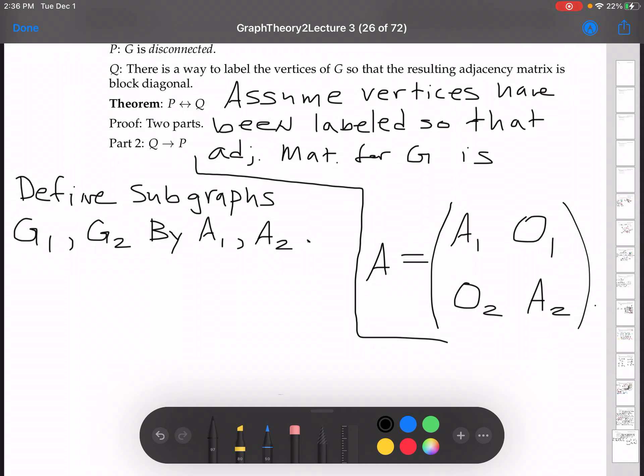Now, G1 and G2 have some amount of vertices. We can assume that G1 has M vertices and G2 has N vertices. I'm not saying anything about what M and N are, so that's okay.